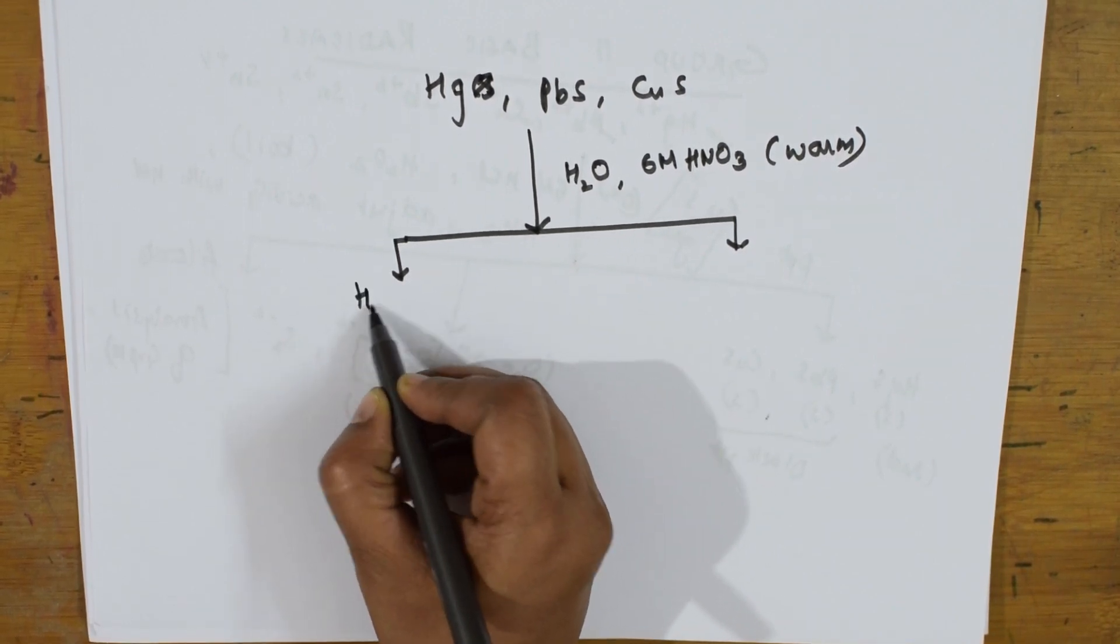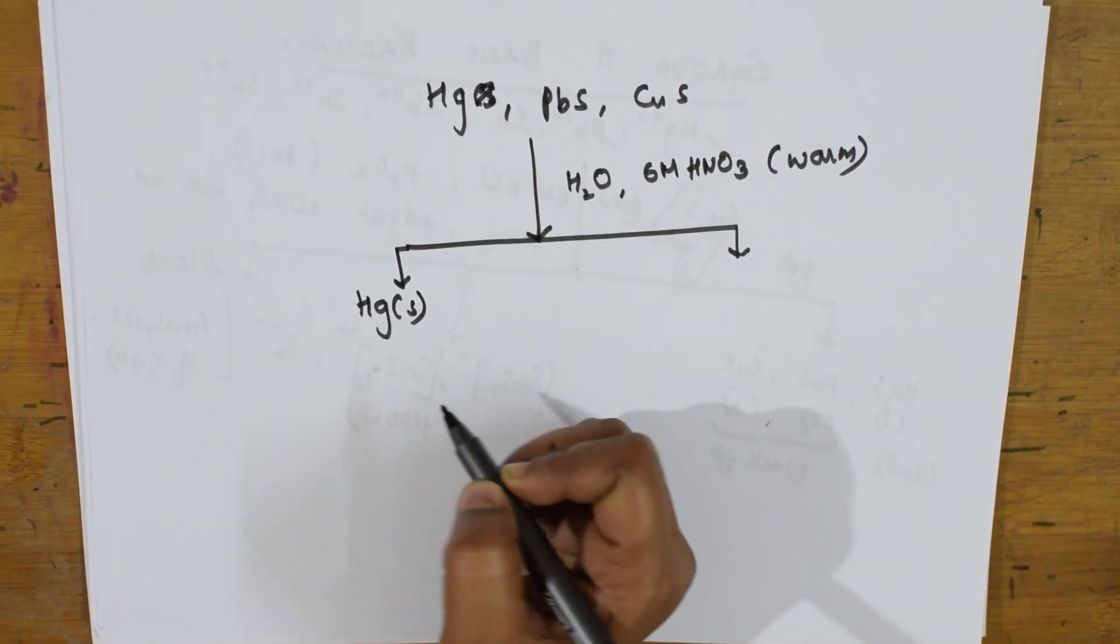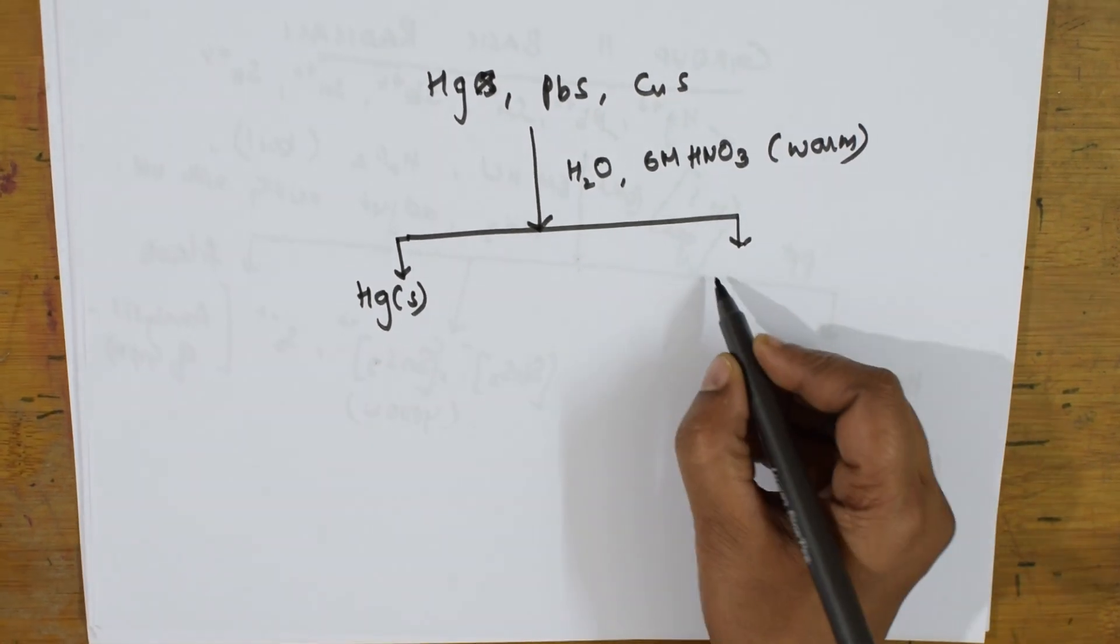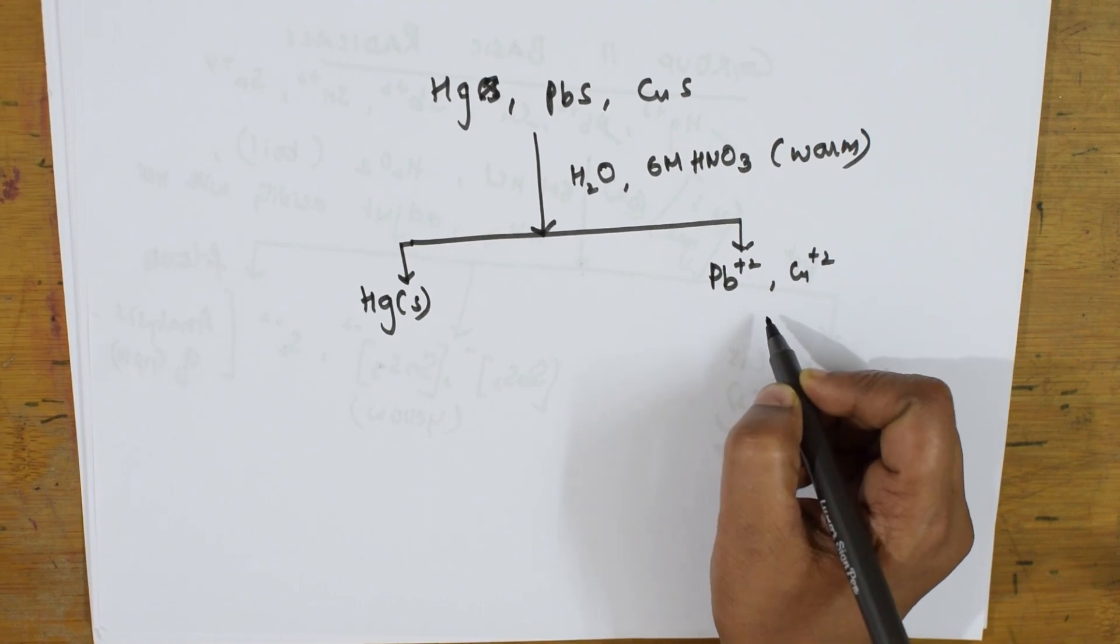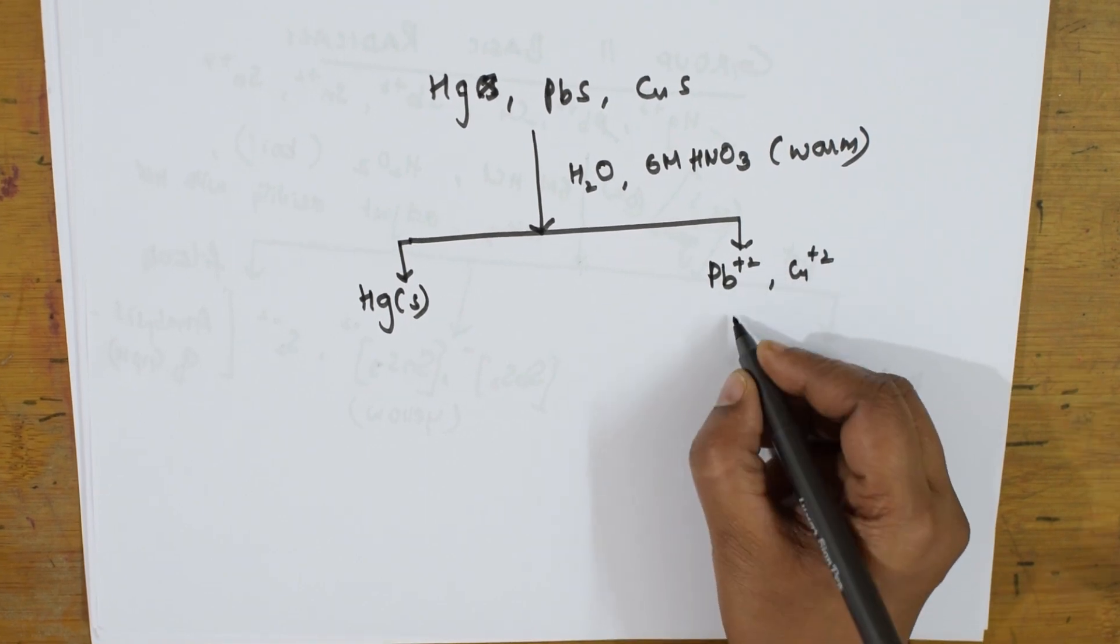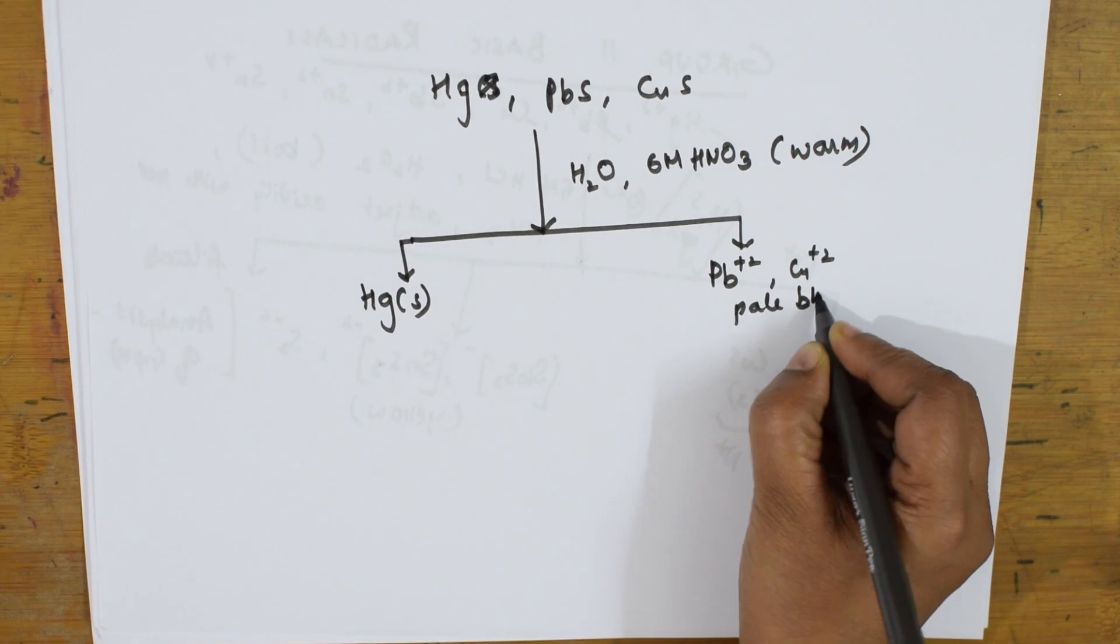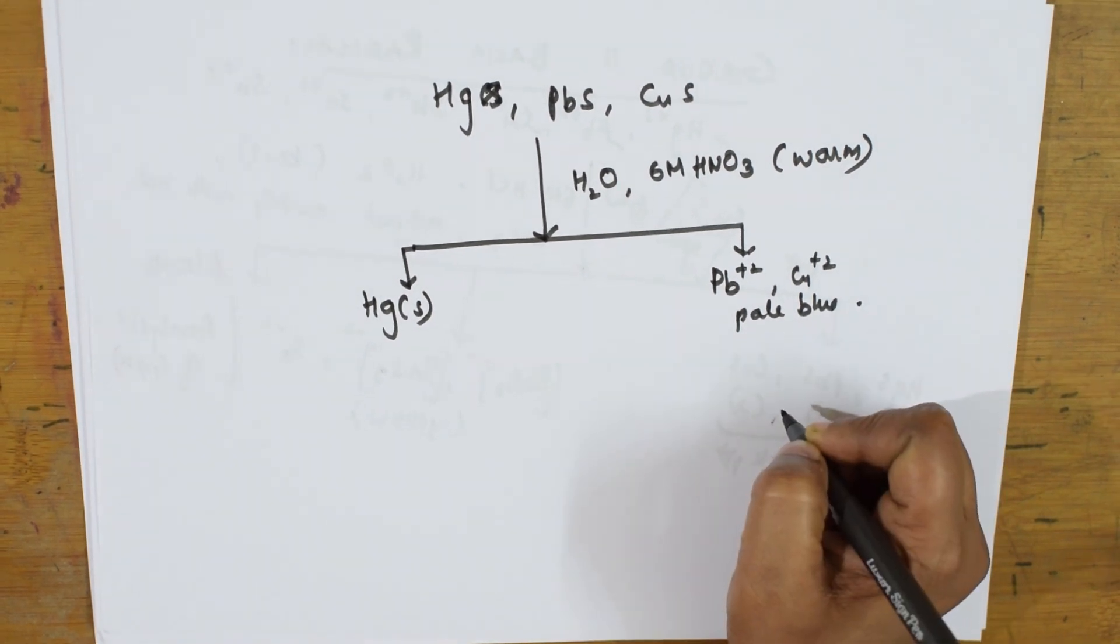Here I'll be getting HgS and I'll be getting Pb²⁺ and Cu²⁺. These are pale blue in color.